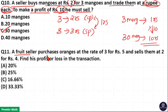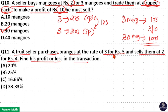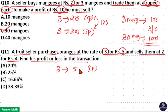Next problem: a fruit seller purchases oranges at the rate of 3 for rupees 5, and sells them at 2 for rupees 4. Find his profit or loss in the transaction. The cost price is 3 oranges at rupees 5.